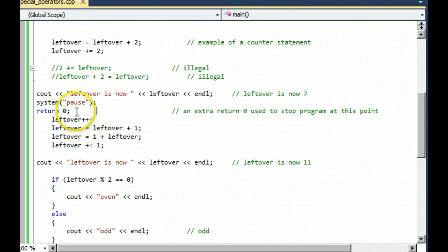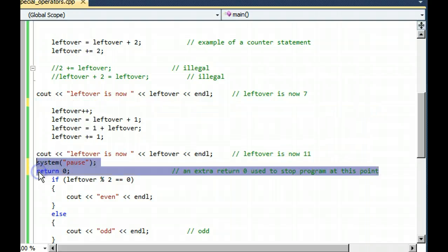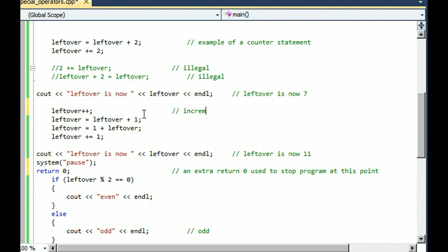Next, we're going to drag and drop our system pause and return zero endpoint down to right below the next out-ended cout statement, where we're examining what happens when we use the plus plus symbol, which in your notes is called the incrementing operator. Well, that adds one. I believe that leftover was up to seven. So when you have one added to that, it's eight. And then this line of code is another way of adding one. So we're up to nine. And then this line of code is yet another way. And then this plus equals is back again. So leftover is now a grand total of 11.